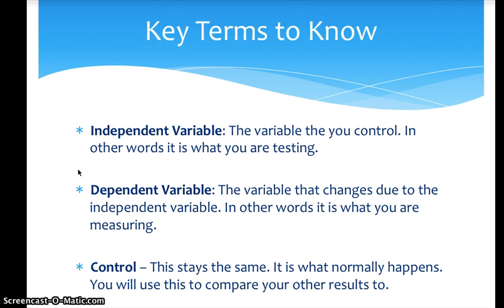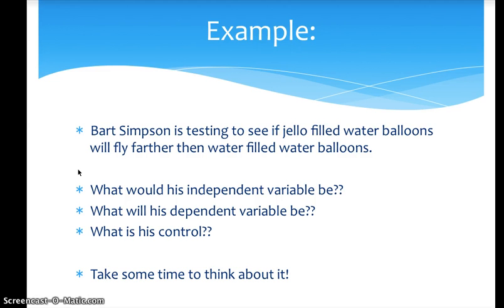So we're going to compare the water balloon versus the jello balloon. Think about which one is the independent variable, how do we know if it worked or didn't work, and what is the control? Bart Simpson is testing to see if jello-filled water balloons will fly farther than water-filled water balloons. What would his independent variable be? What will his dependent variable be? And what is his control? Take some time to think about this — press pause if you need to.